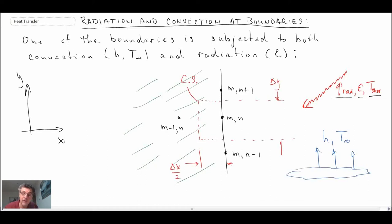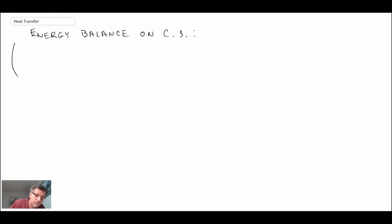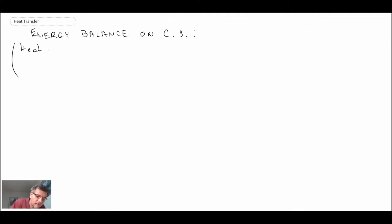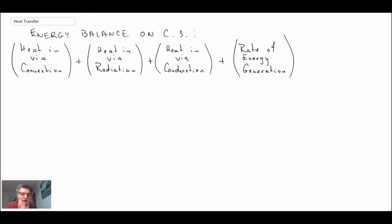And so with that, we can now go ahead and we're going to write an energy balance on the control surface. Just like before, what we're going to have is heat in through convective heat transfer. We have heat in through radiation heat transfer. And then we're also going to assume that we have conduction coming into our little control volume here across the control surface. So we have heat in through convection, radiation, conduction, plus the rate of energy generation within our control volume. And all of that has to equal zero.